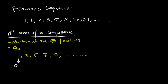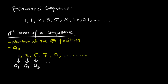In this sequence, the number at the first position is the first term, denoted a₁. The number at the second position is the second term, a₂. The number at the third position is the third term, a₃. Now, if we ask: what is the fifth term?